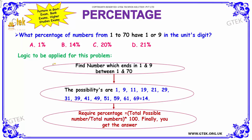The logic to be applied for this problem is you have to find the numbers which end with 1 and 9 between 1 to 70. The possibilities are, as you can see: 1, 9, 11, 19, 21, 29, 31, 39, 41, 49, 51, 59, 61, and 69.